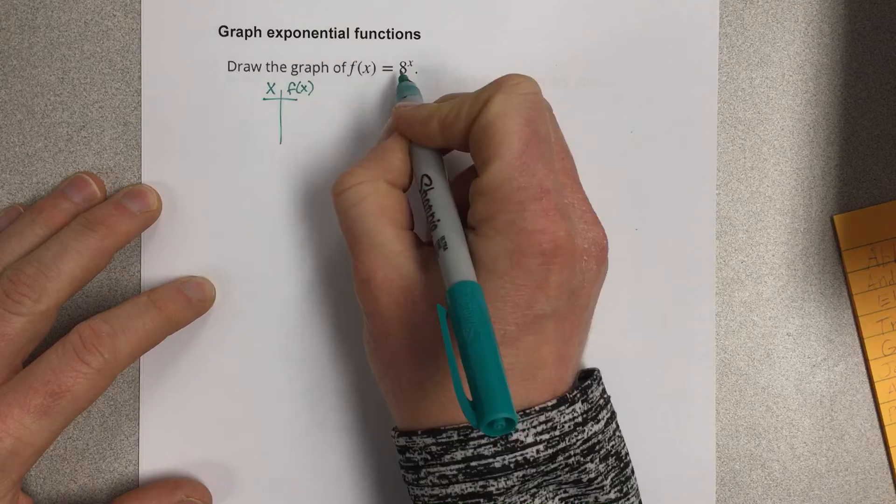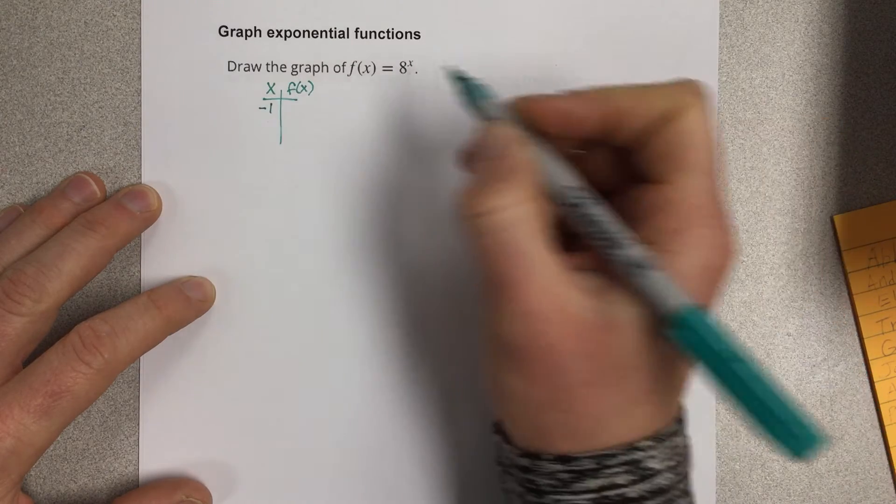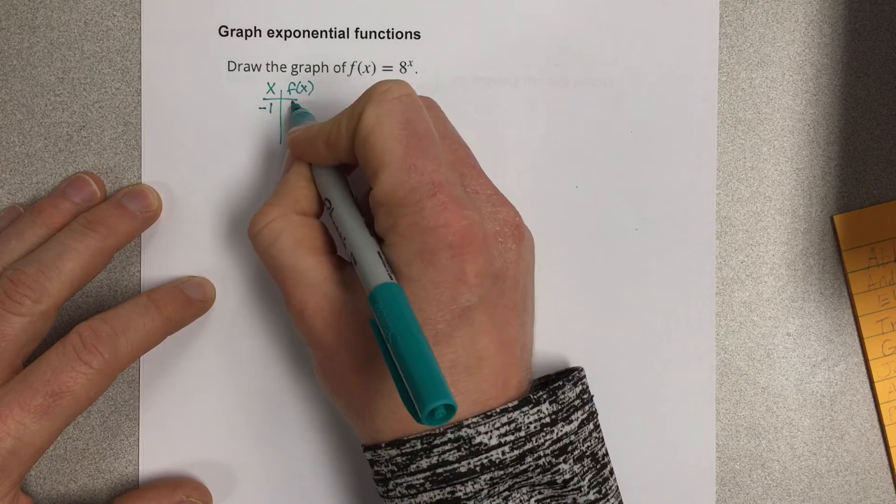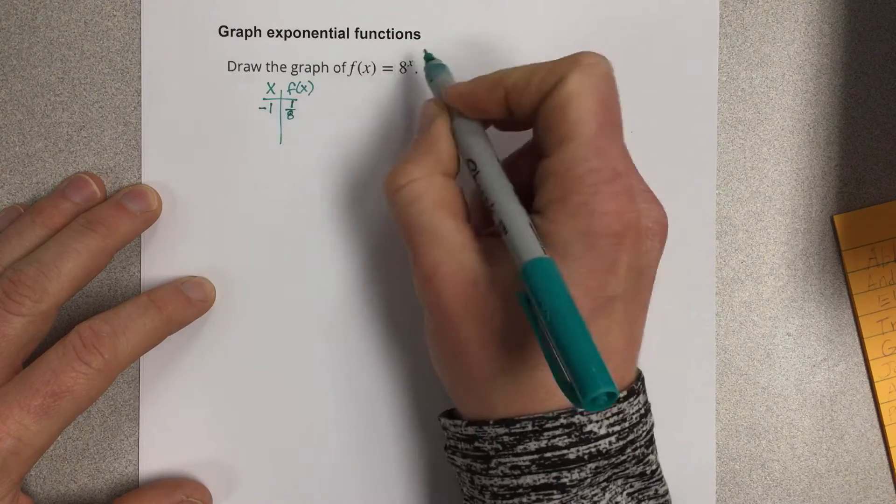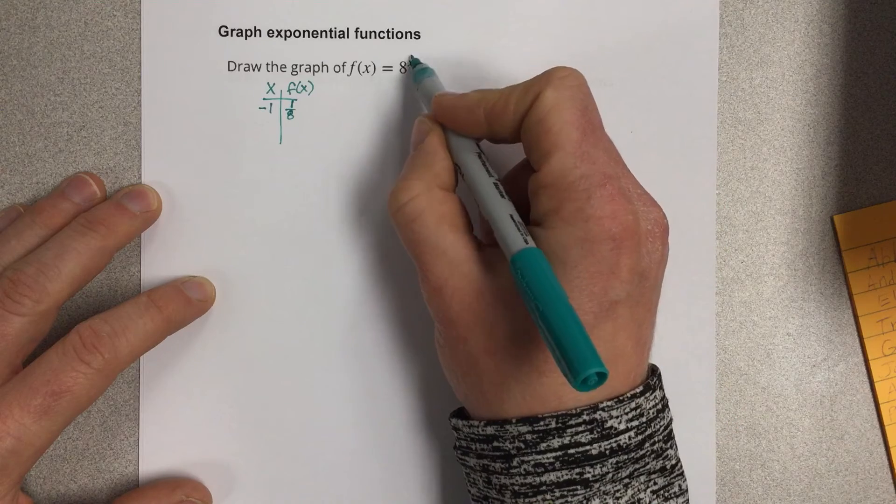Let's plug in negative 1 for x. When I plug in negative 1 for x, that's really just 1/8. Remember a negative exponent means to divide, so I end up having 1/8, 1 divided by 8.